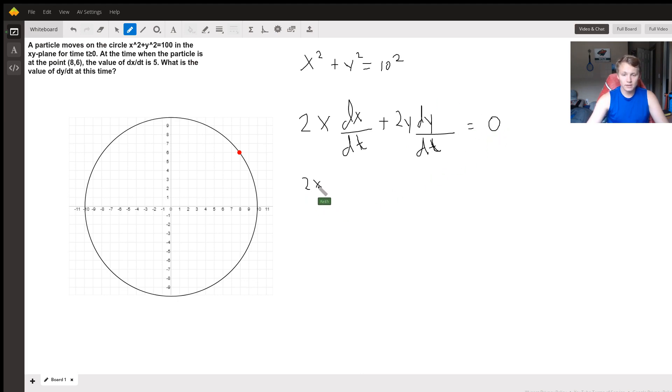So we have that 2x dx/dt is equal to negative 2y dy/dt. And so if we're trying to find what the value of dy/dt is at this time, well the twos will cancel and we can plug in values for x and y.